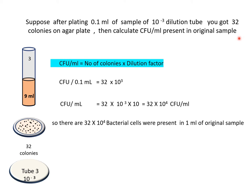Then how to calculate CFU per ml present in our original sample? By using the formula, colony forming units per ml is calculated by number of colonies multiplied by the dilution factor. We used 0.1 ml of sample for plating, so CFU per 0.1 ml equals 32 multiplied by the dilution factor of tube number 3, which is 10 power 3.